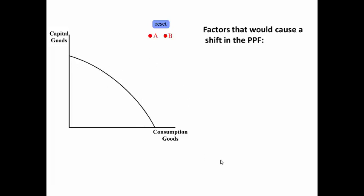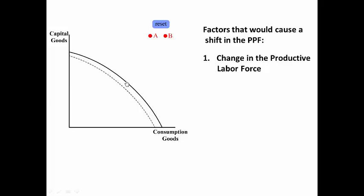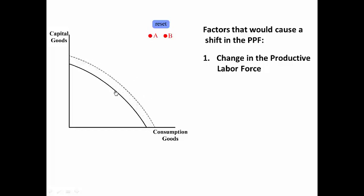There are factors that would cause a shift in the production possibilities frontier. Number one, if there's a change in the productive labor force — if the labor force gets more productive, then this shifts the production capabilities of that country outward, and if it gets less productive, then it shifts it inward.